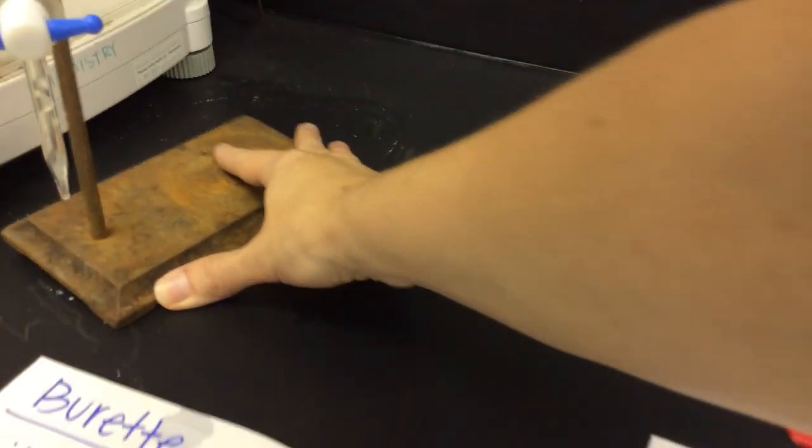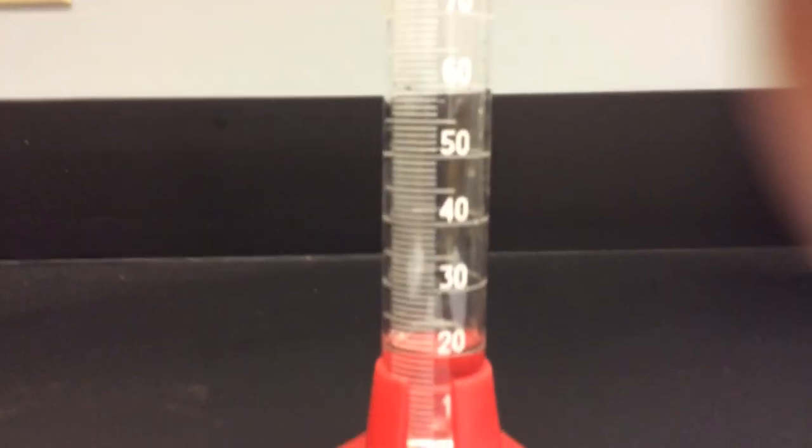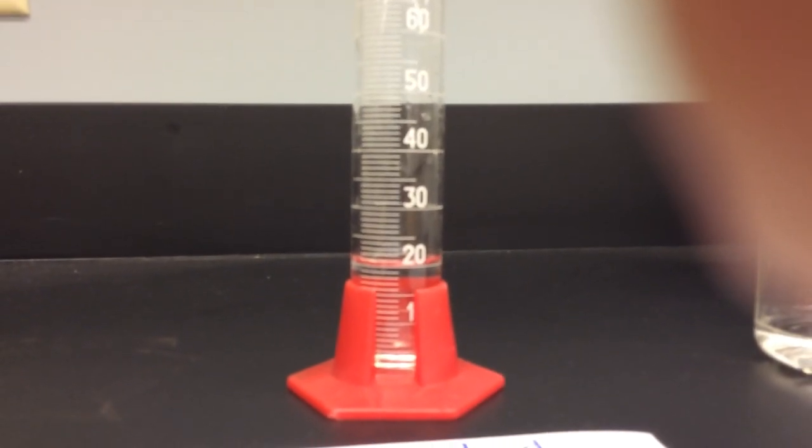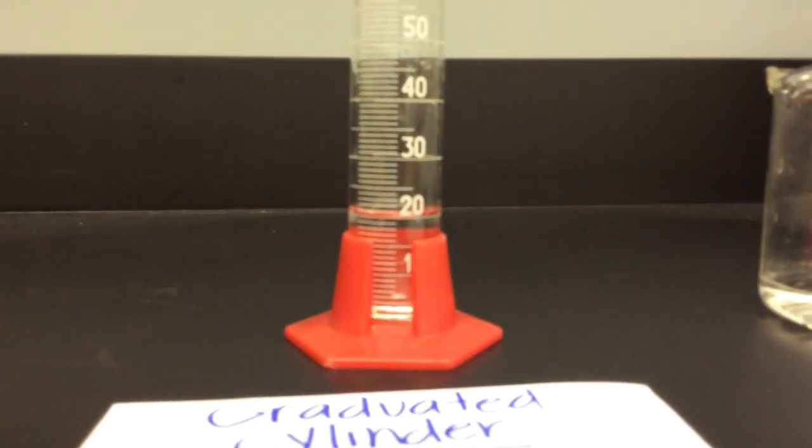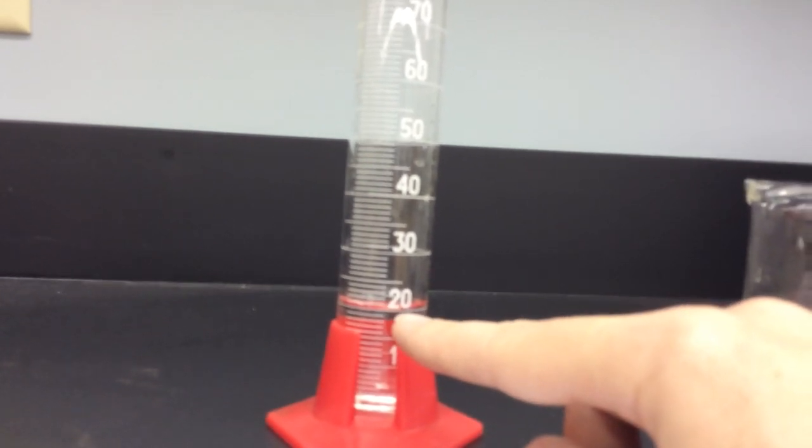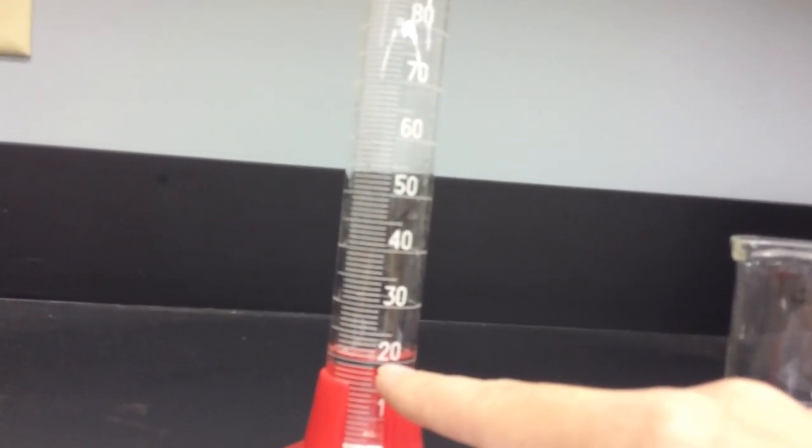Now let's compare that to the graduated cylinder. We're also going to be measuring 20 milliliters here, just as a comparison. So when I look at the graduated cylinder, the meniscus is smaller on the graduated cylinder because the tube is wider. But if I get my meniscus right on 20, now look at the units. These are in 1's.